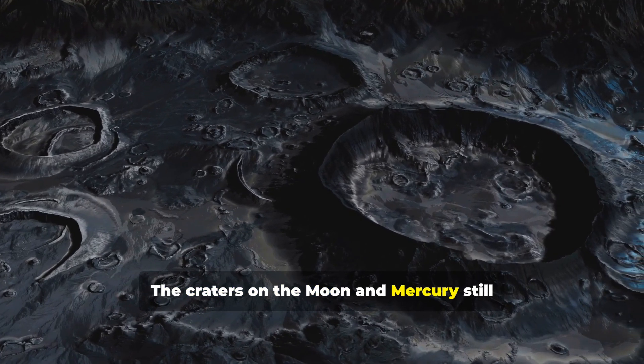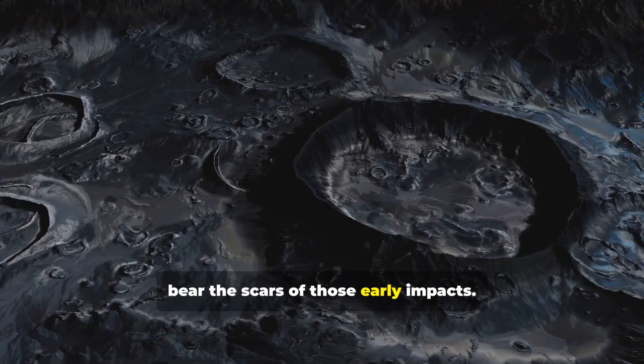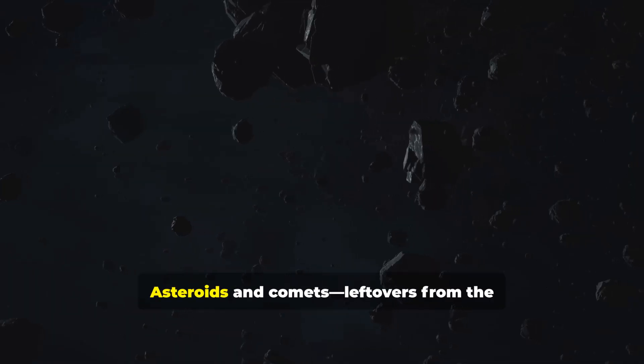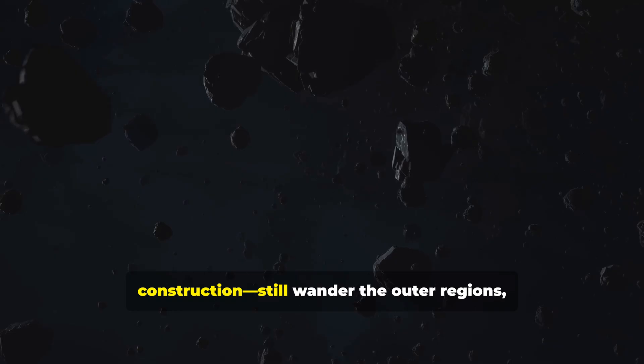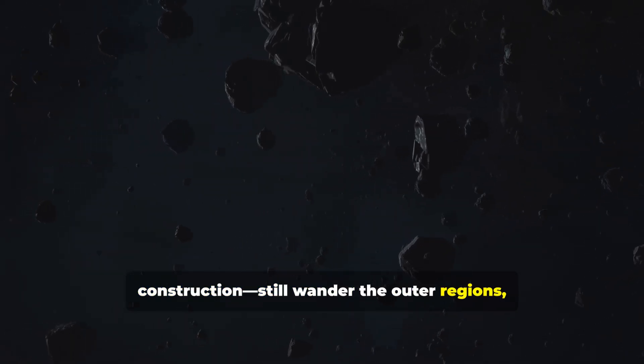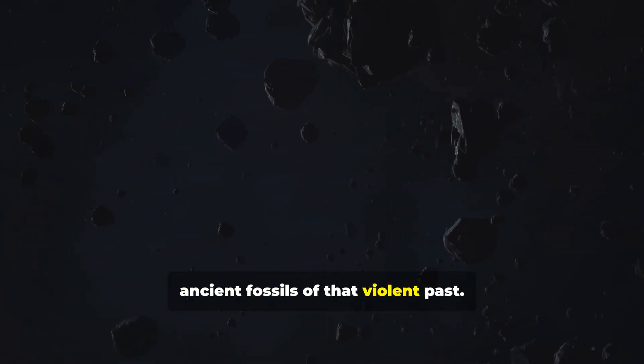The craters on the moon and Mercury still bear the scars of those early impacts. Asteroids and comets, leftovers from the construction, still wander the outer regions, ancient fossils of that violent past.